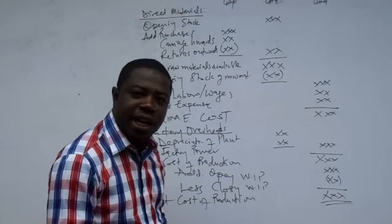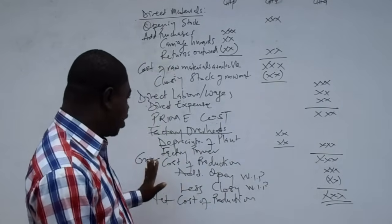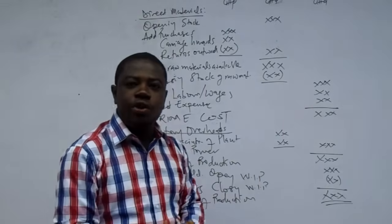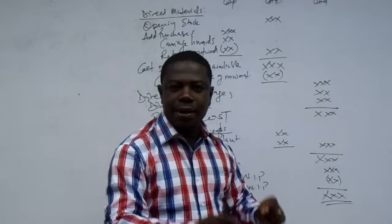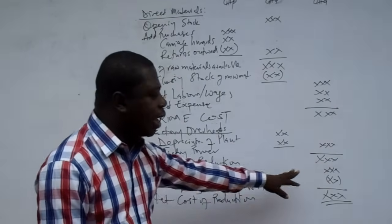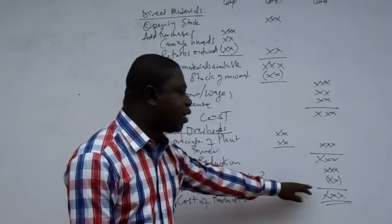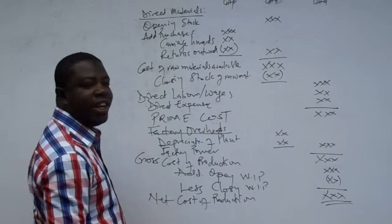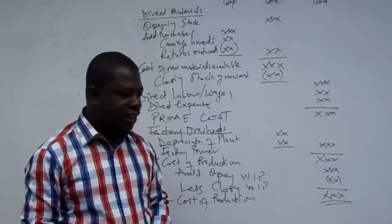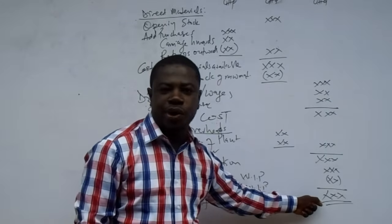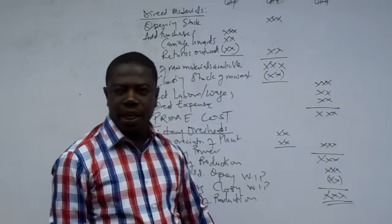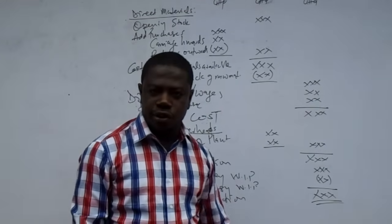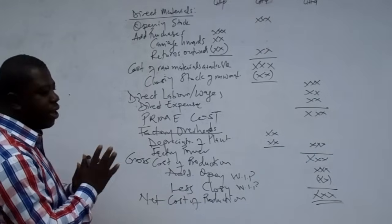When there are no work in progress balances to adjust, the cost of production is transferred directly to the income statement. But when there are work in progress balances in the question, you add the opening WIP and subtract the closing WIP to arrive at the net cost of production. It is this net cost of production that you transfer into the income statement to replace purchases in the calculation of cost of sales.